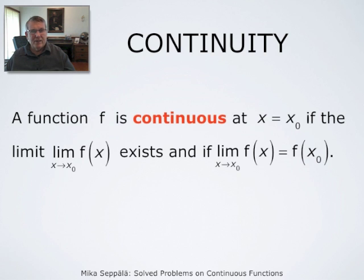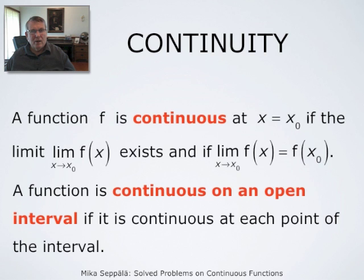We say that a function f is continuous at the point x equals x₀ if it has a limit at that point and if that limit agrees with the value of the function. Then we say that a function f is continuous on an open interval from a to b if it is continuous at each point of this open interval.